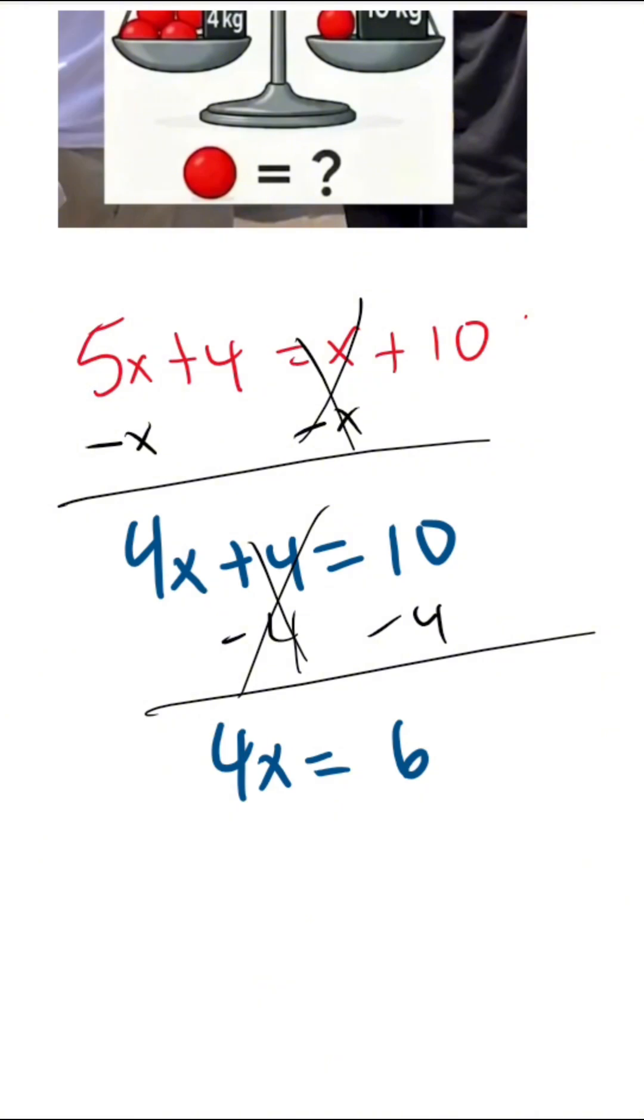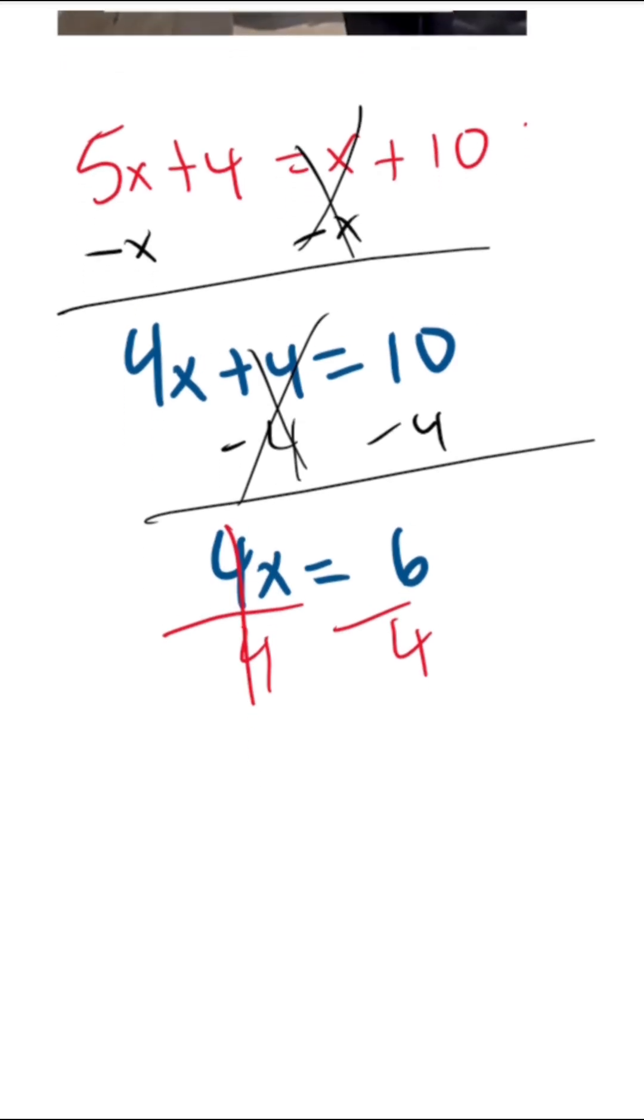Almost done. Now I have to get x by itself, so I'm going to divide both sides by that 4. What's going to happen is the 4 is going to cancel, and I'm going to be left with x equals 6 over 4. But 6 over 4 can be reduced by dividing the top and bottom by 2, so we should get 3 over 2.